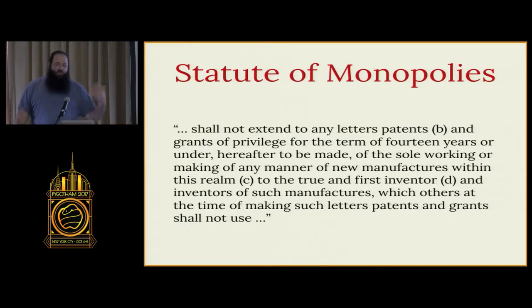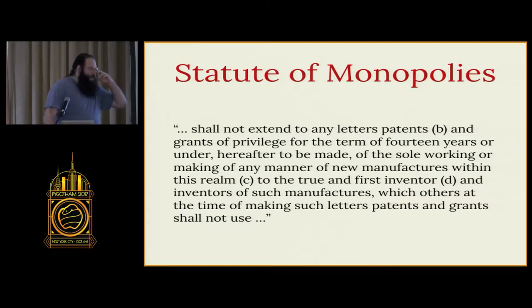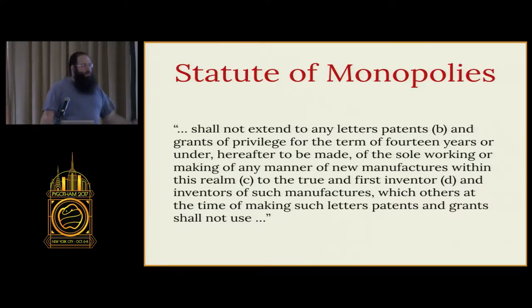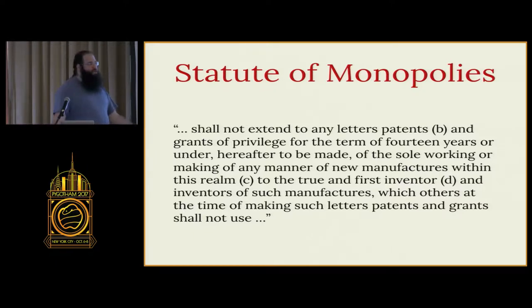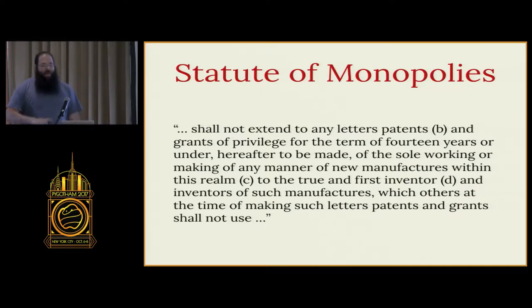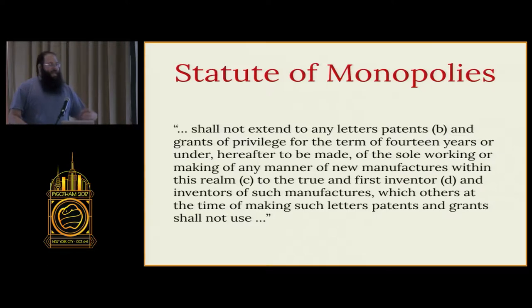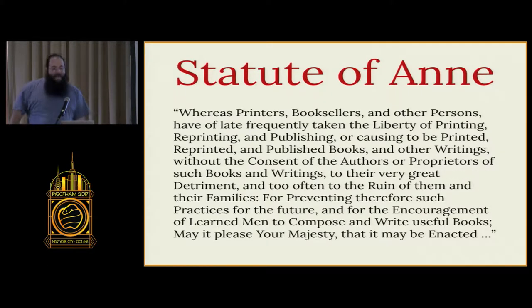Before we jump into IP as it is today, let's talk about where it came from. For the tradition that became US IP law, it basically all started in 1624 in England. Some things called patents, or letters patent, had existed before then, but they were generally one-off decrees by the king or queen that gave monopoly control over an entire industry. As you might expect, they were deeply unpopular. So in 1624, the Statute of Monopolies transferred control of those over to the English parliament and ensured that they maintained a temporary patent status. This was revisited again in the Copyright Act of 1710, more commonly known as the Statute of Anne.